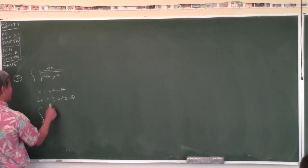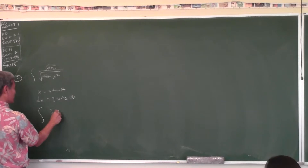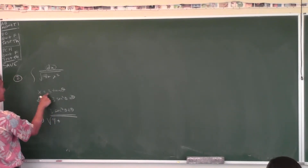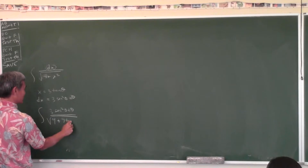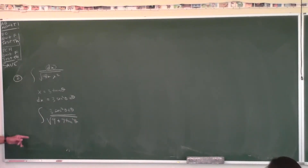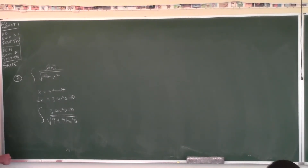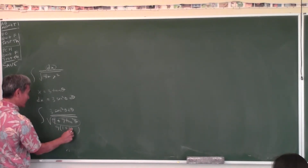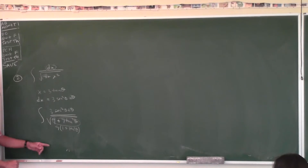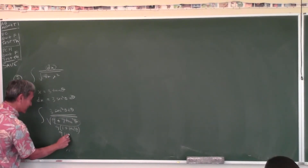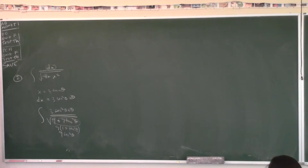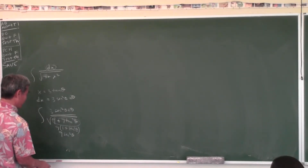So √(9 sec²θ) equals 3|sec θ|. The 3's cancel out, and sec²θ over sec θ equals sec θ. The whole mess simplifies to just the integral of sec θ dθ. That's on the list — it's doable.